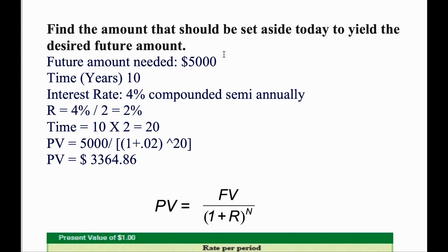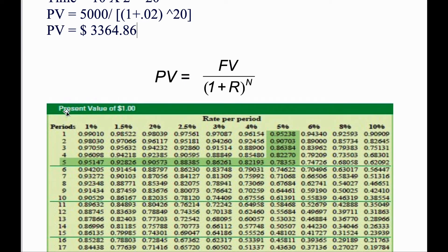Now let's find the same value using the table. So as per our table, in the first column, you have the number of periods. And in the first row, you have the rate per period.